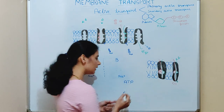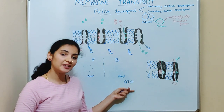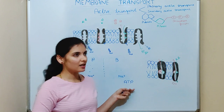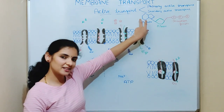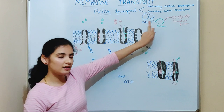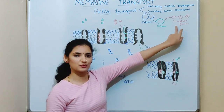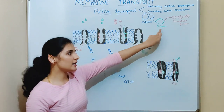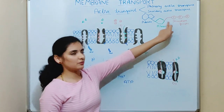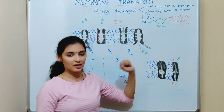ATP stands for adenosine triphosphate, which is considered the energy currency of a cell. The structure of the ATP molecule consists of a nitrogen base, that is adenine, a ribose sugar, and three phosphate groups. Adenine combines with ribose sugar to form adenosine, plus triphosphate — hence the name adenosine triphosphate.